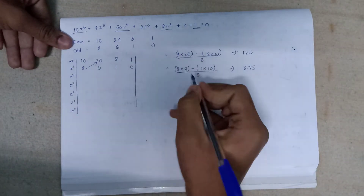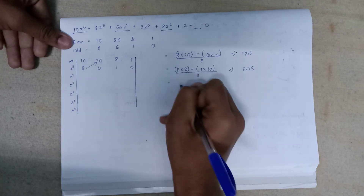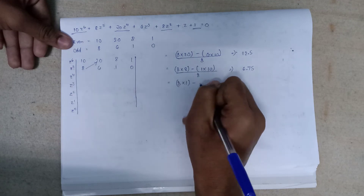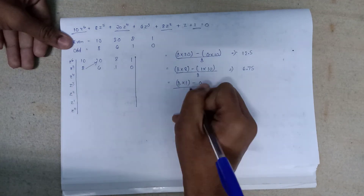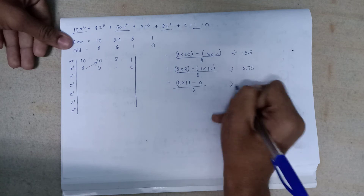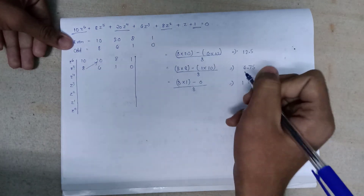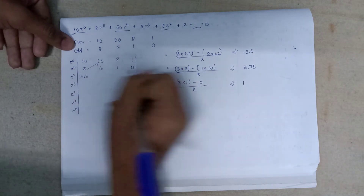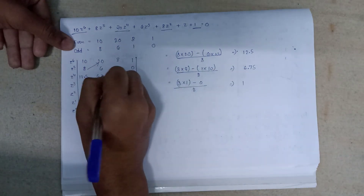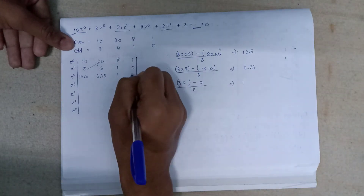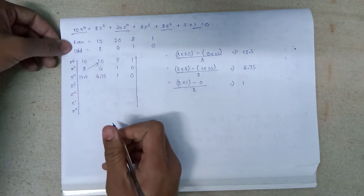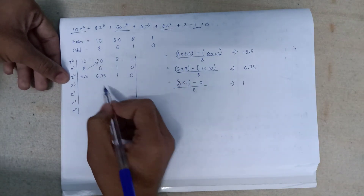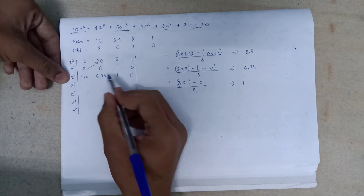Next: 8 × 1 minus 0 × 10, divided by 8 gives 1. Placing the values: 12.5, 6.75, 1, and 0 for the z⁴ row. We continue performing this type of multiplication to fill in all remaining entries of the Routh array.